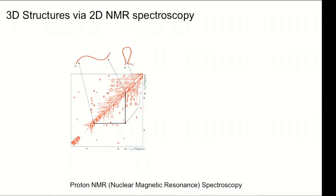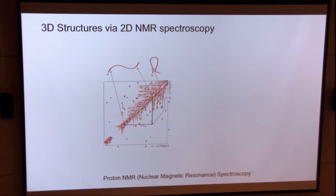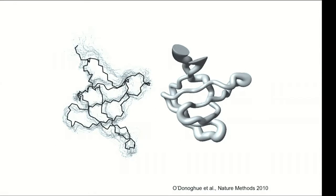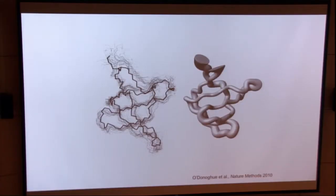The other main method, accounting for about 10% of known structures, is NMR. In NMR, the data is not so directly related to the structure. In an NMR spectrum, essentially every hydrogen atom will lie on a diagonal, and pairs of protons that are physically close will have a cross-peak in the off-diagonal. By combining many thousands of these signals, we're able to calculate structures. Because we have fewer constraints in NMR than in crystallography, we generally get an ensemble of structures, which is often represented as a sausage plot, where the thickness represents areas of uncertainty.